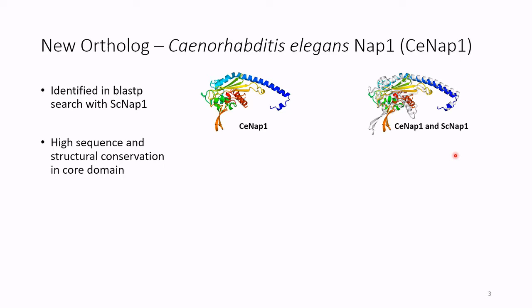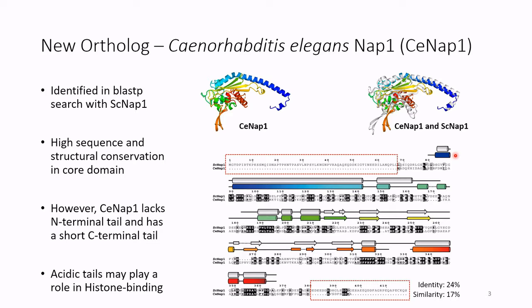What is not obvious, however, is the conservation, or lack thereof, of the domains outside of the core domain. Looking at a sequence alignment, it is immediately apparent that yeast NAP1 contains extra regions outside of this core domain — specifically an N-terminal tail and a C-terminal tail, which are not present in the crystal structure, presumably because they're disordered. These tails are thought to play a role in histone binding and are very acidic, in contrast to the very basic nature of histones. Our newly identified worm ortholog naturally lacks this N-terminal tail and has a much shorter C-terminal tail, making it a great model system to test the role of these acidic tails in histone binding.